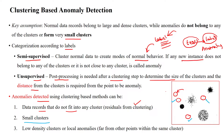Data points not belonging to any cluster are called anomalies in the given dataset. Small clusters are also considered anomalies — for example, a cluster having only three data points is a very small cluster and is also an anomaly. Low-density clusters are local anomalies. Low density means clusters with only one, two, or three data points — these are called low-density datasets and are also considered anomalies.